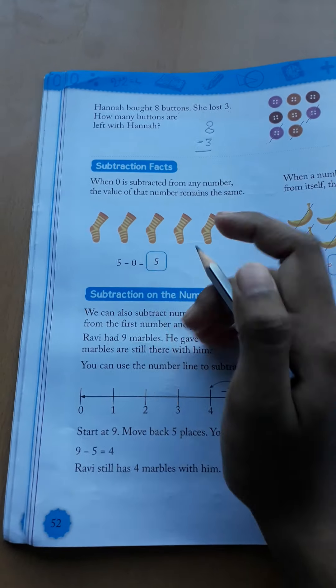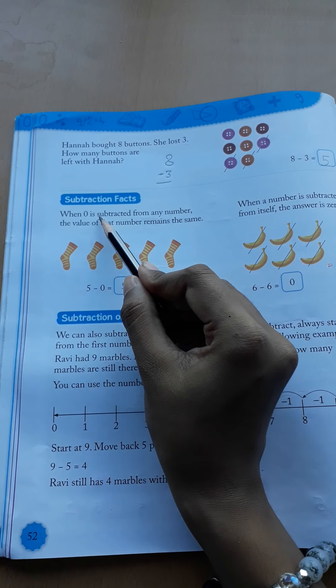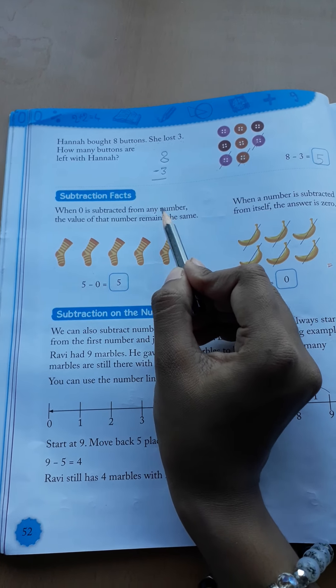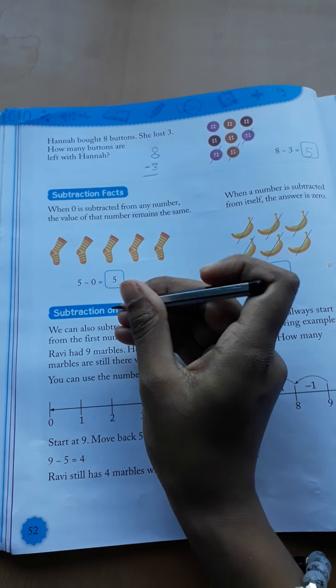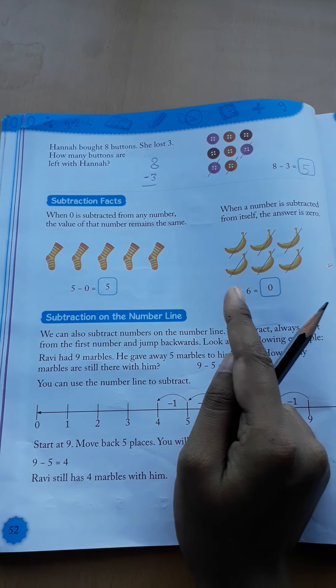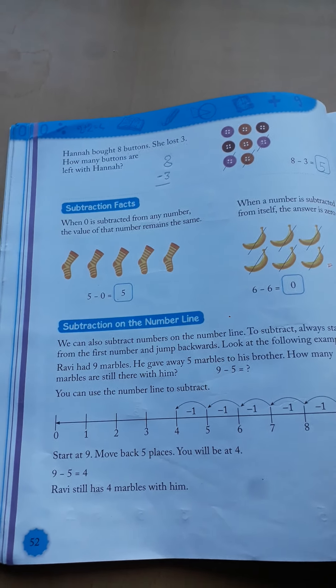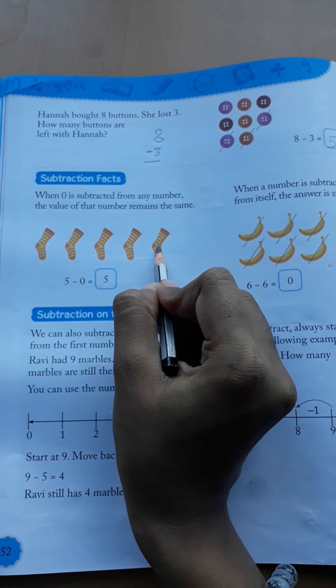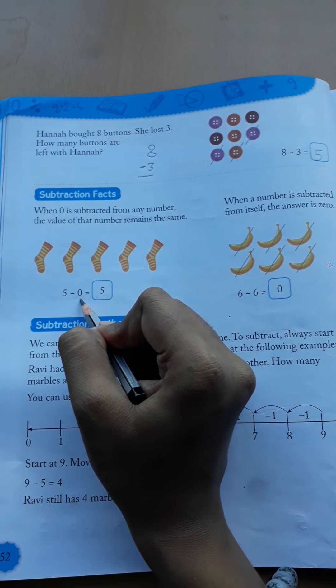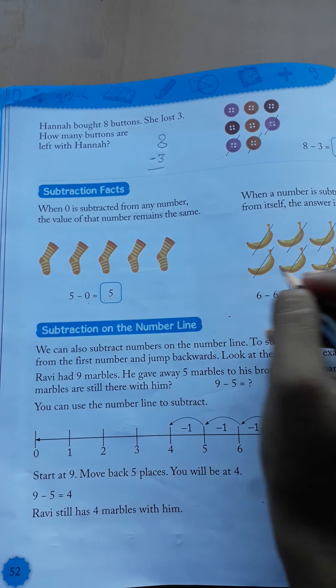Subtraction fact. When 0 is subtracted, now you have to focus on this. When 0 is subtracted from any number, the value of that number remains the same. See, agar hum kisi bhi digit mein se 0 ko minus karte hain, toh woh digit as it is hi rahti hai. 0 ka waha par koi role nahi hoga. For example, see here, 1, 2, 3, 4, 5 socks. 5 socks mein se humne 0 ko minus kiya, so what it will be? It will be 5 only.